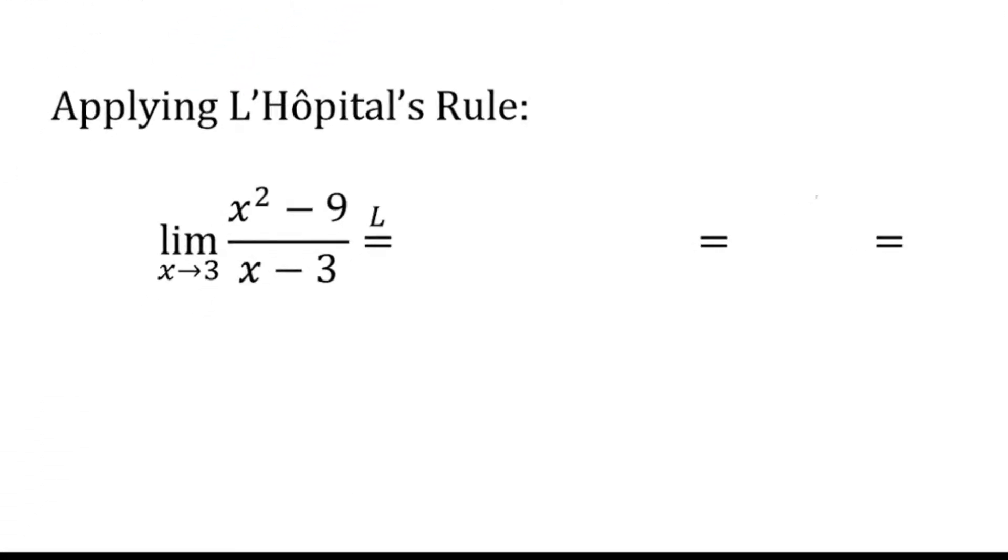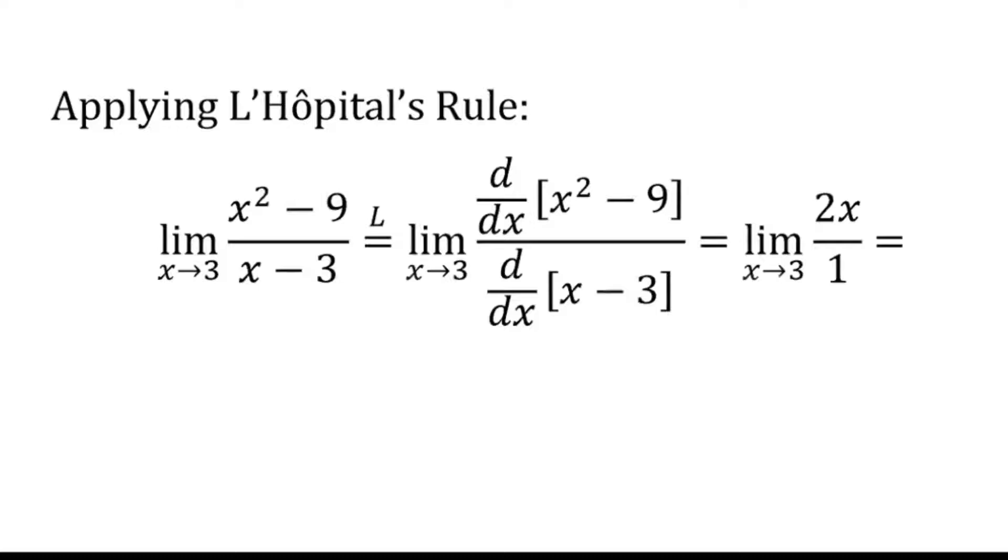Now let's work the same problem using L'Hôpital's rule. L'Hôpital's rule says take the derivative of the top and the derivative of the bottom. So the derivative of x squared minus 9 is 2x and the derivative of x minus 3 is just 1. So we get the limit as x approaches 3 of 2x over 1.